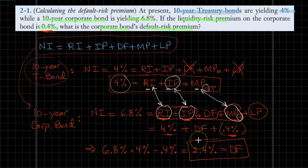So 2.4% and that's our default risk premium. This is the result that we were after. That should be the end of our solution. Hope you enjoyed the video. Stay tuned.